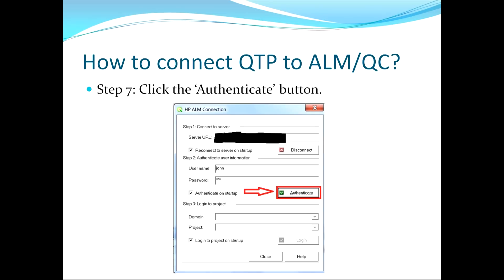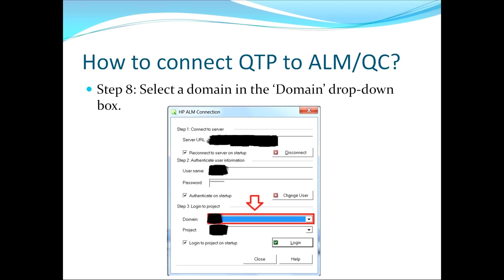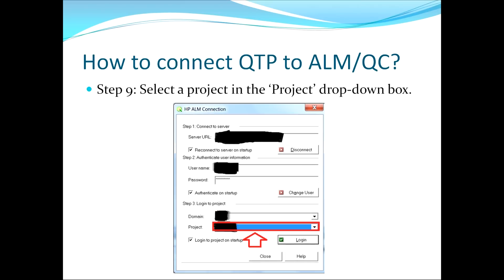This is typically what you would like to have happen. However, in the instance that you would not like QTP to automatically log in with your username and password, you would uncheck that box before clicking the Authenticate button. After you click the Authenticate button, you'll then be presented with the option to choose your domain and project. The domain list will populate based on the domains that your username has access to. Once you've made your choice in the domain drop-down, move down to the project input and select the project you would like to connect to. The list of projects shown are the projects you have access to within the domain that you chose.